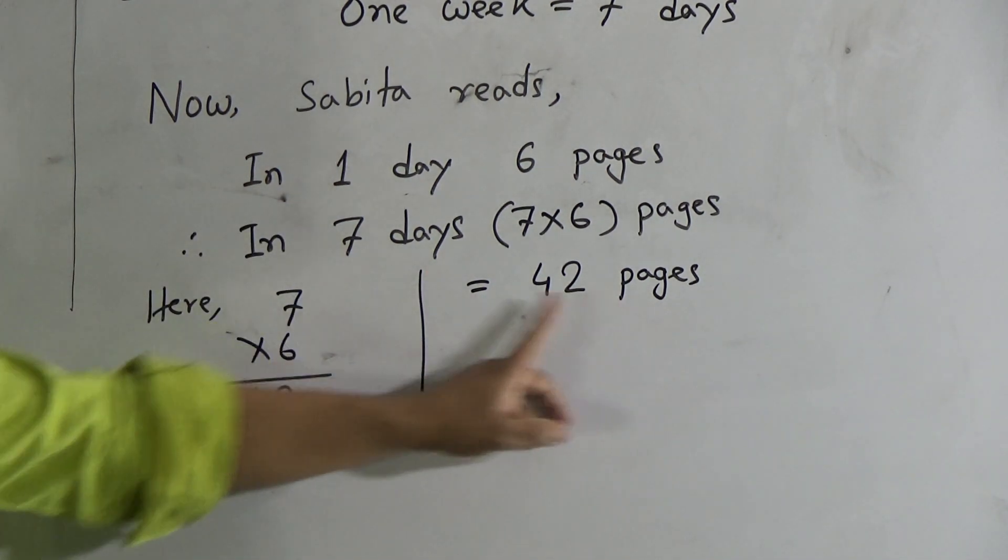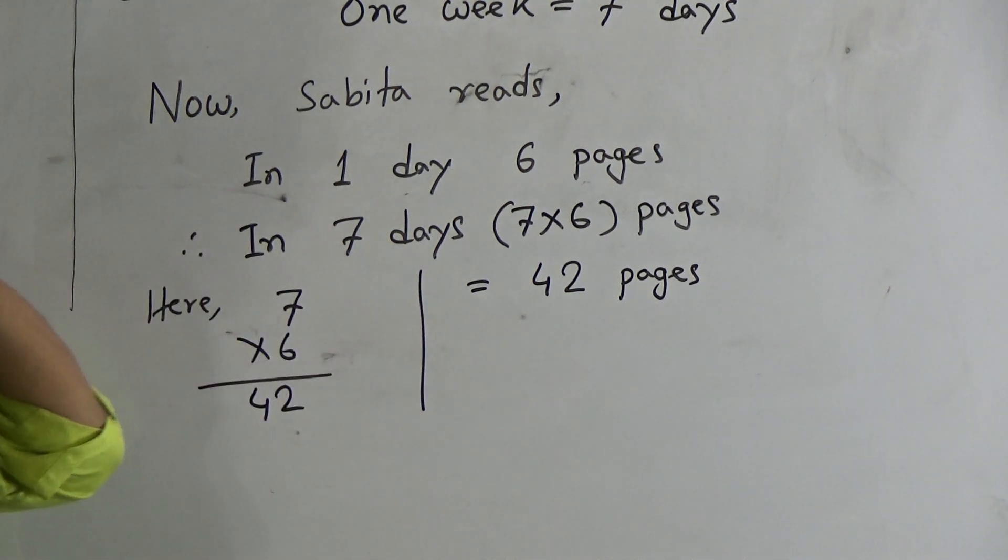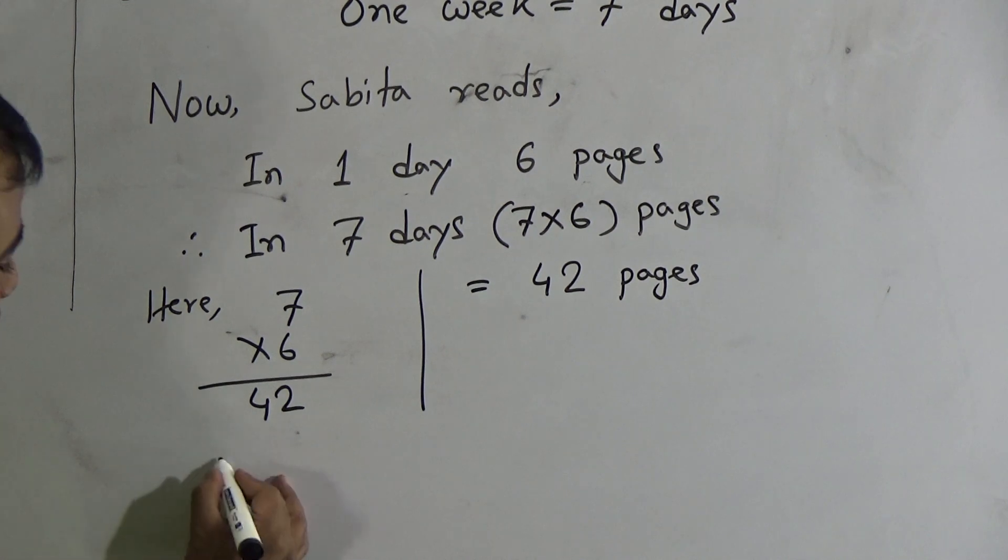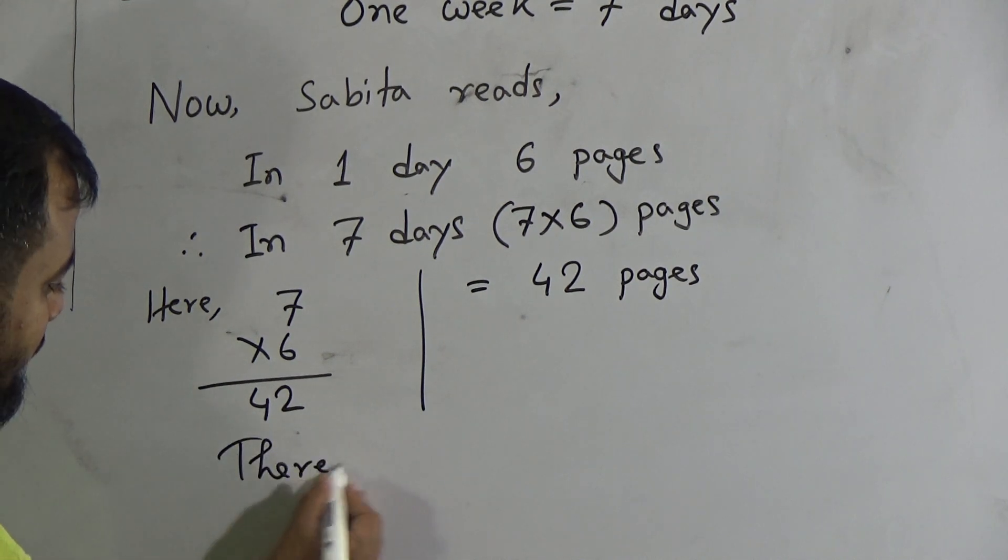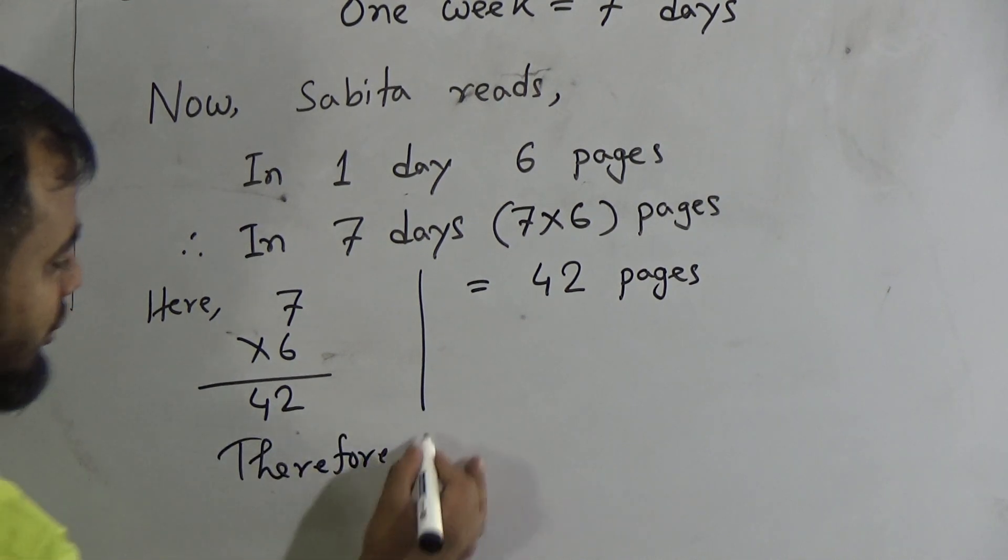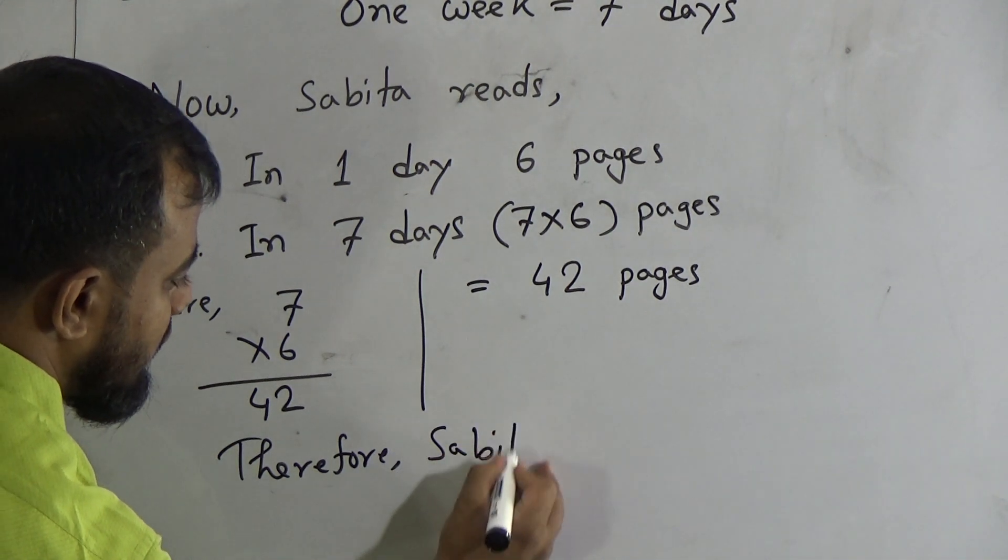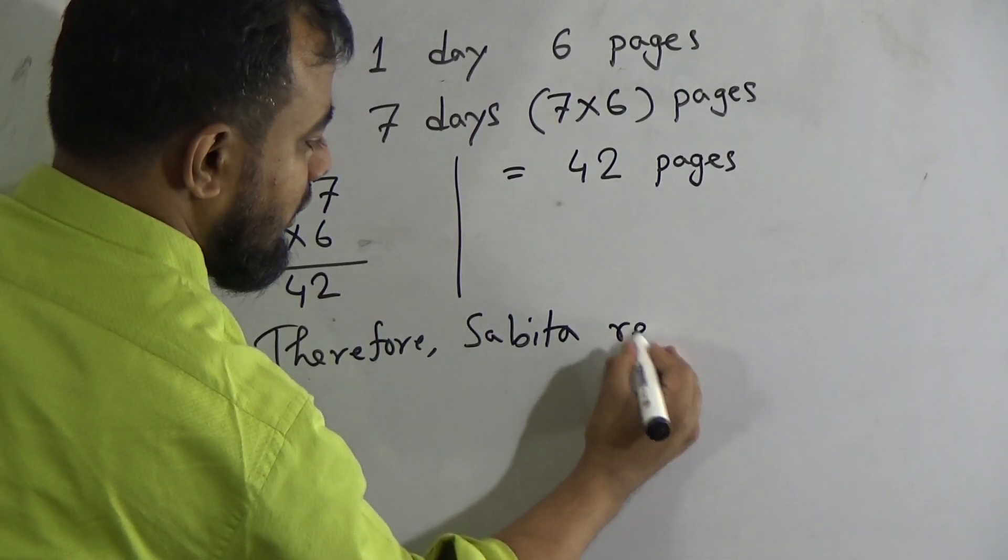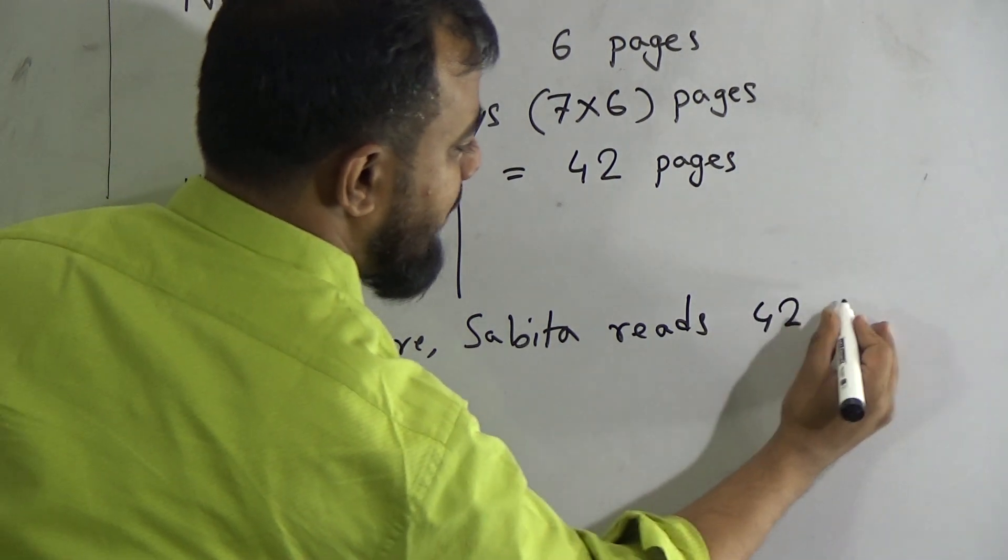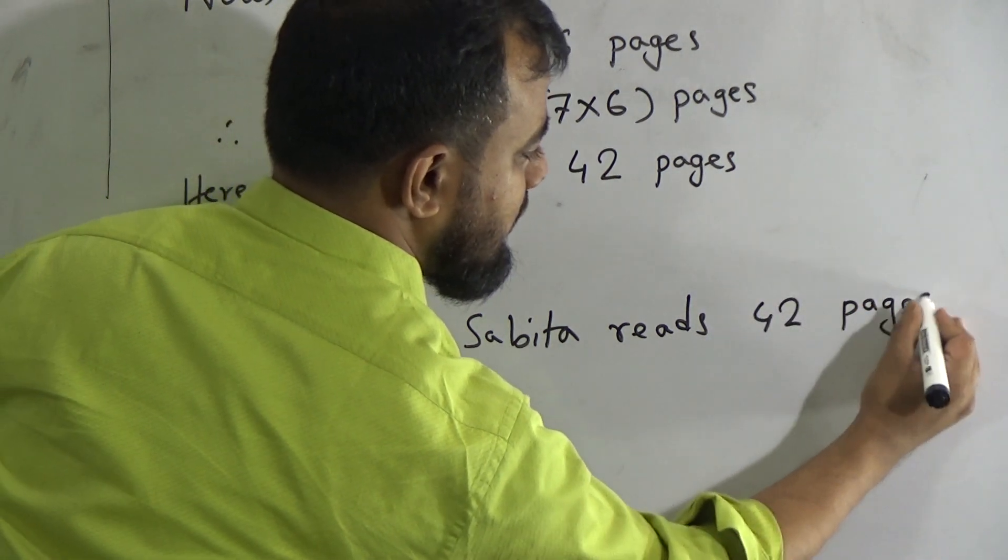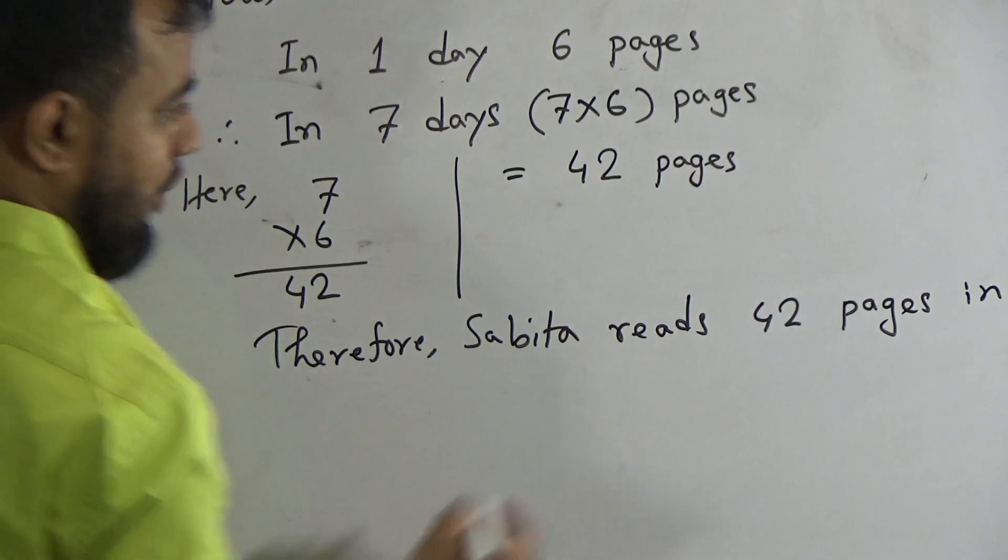This means that Sabitha reads in 7 days, 42 pages. But the question says that it's not 7 days. In the question we have, in 1 week. That's why you should write down another line here. Therefore, Sabitha reads 42 pages in 1 week.